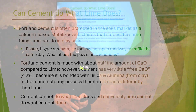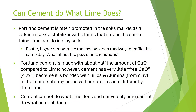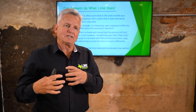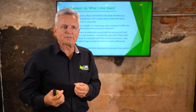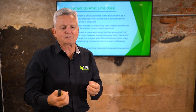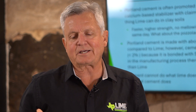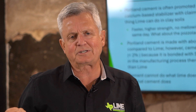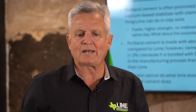Portland cement is made with about half the calcium oxide that lime is. Lime is almost 100% free calcium oxide. However, Portland cement has very little free calcium in it — typically less than 2%, sometimes about 3%. It's that free calcium oxide that's available to react with the clay soil and transform it into a pozzolonic cement. So there's not a lot of free calcium oxide in Portland cement, and it just reacts very differently in clay soil than lime does.